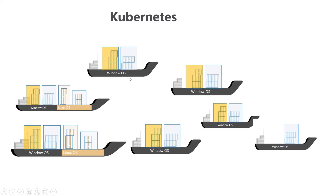Similarly, we can have multiple nodes - multiple ships in the sea, like a cluster. The sea is like a cluster and we have multiple ships inside it. You can consider a ship as a node. To manage all these nodes, all these containers, and all these pods inside the cluster, we need a technology called Kubernetes. Kubernetes has its own programs using the API and kubelet to manage all these containers and nodes inside the cluster.